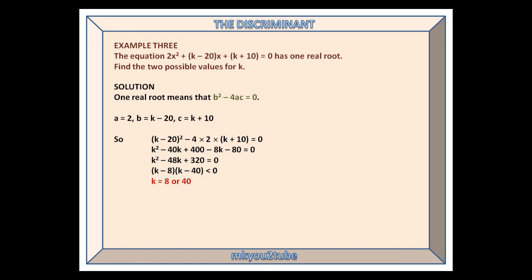a is 2, b is k minus 20, and c is k plus 10. Substitute and solve as shown, and we find that k is either 8 or 40.